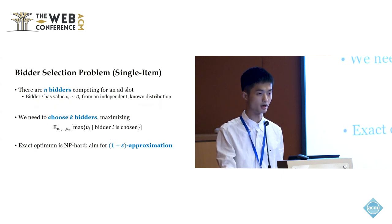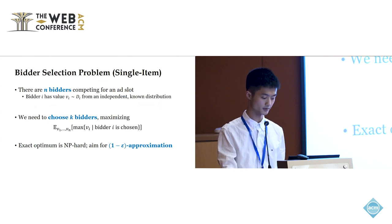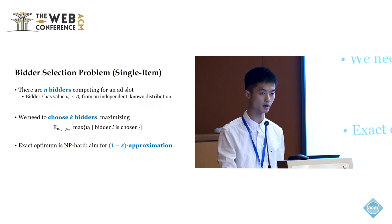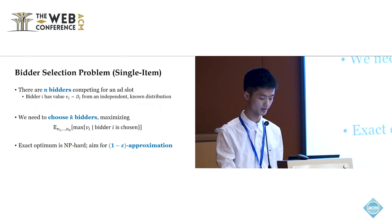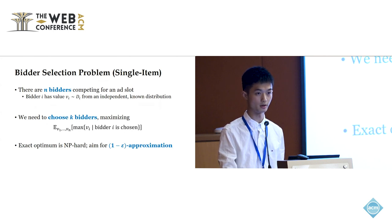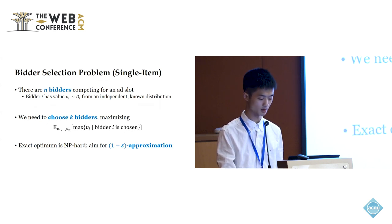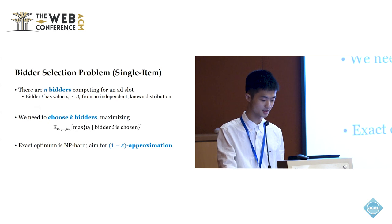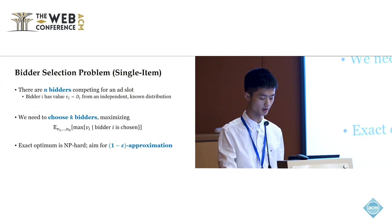The whole process can be summarized as a succinct mathematical problem. Let us first focus on the case where there is only one ad slot. There are n bidders competing for the ad slot, and each of them has a private valuation that is chosen independently from a known prior distribution. We would like to choose a subset of k of the bidders and run an auction among them to determine the assignment, and we aim to maximize the social welfare. Since the auction format is a single item auction, the objective here is to maximize the formula shown on the screen, which is the expected maximum of the valuations of the selected bidders. This is a fundamental mathematical problem, and it has been shown to be NP-hard. So what we can hope for here is a 1-epsilon approximation algorithm. This is also known as a PTAS.